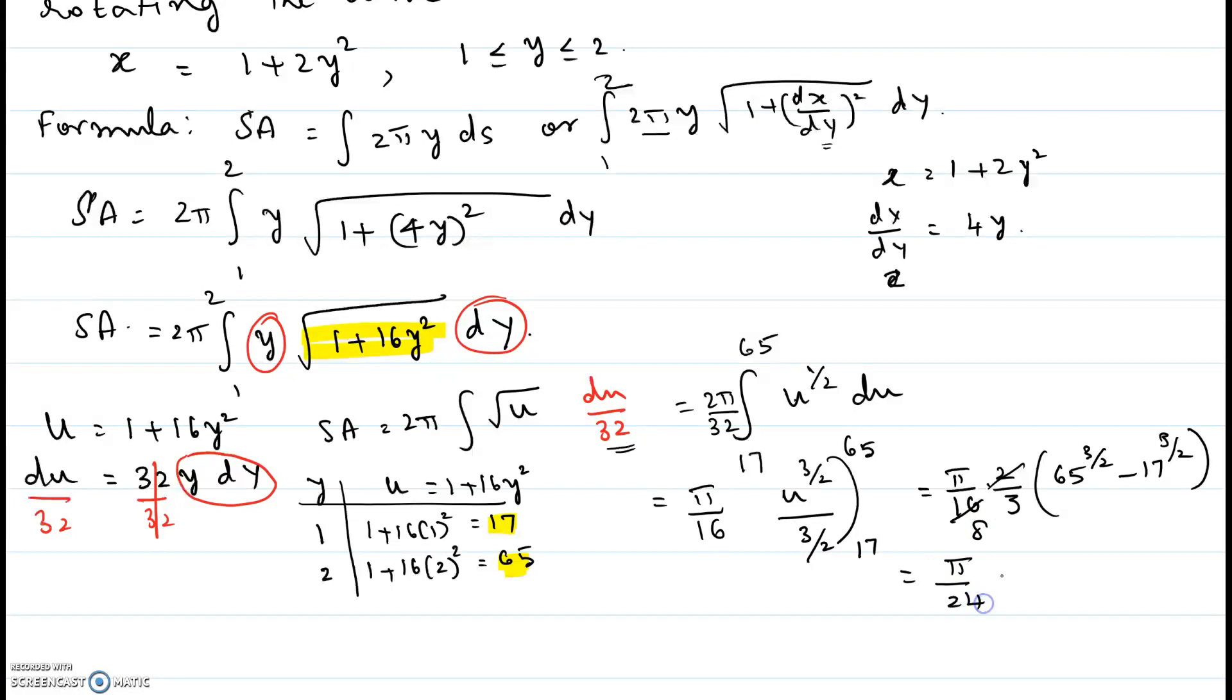65 to the power 3/2 can be written as 65 times square root of 65 minus 17 times square root of 17. So that becomes the surface area. Hope this video helps.